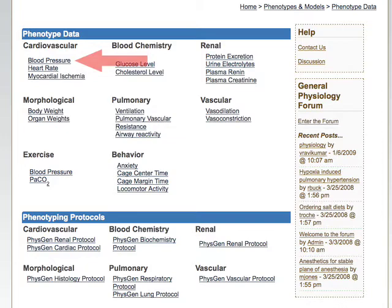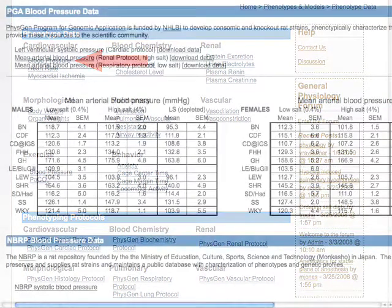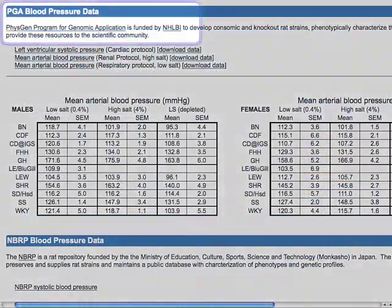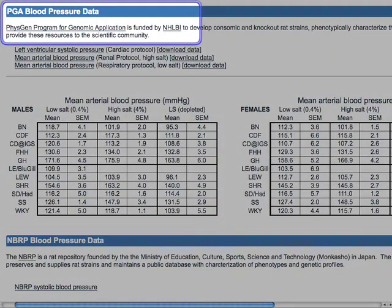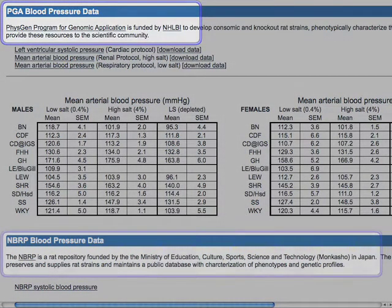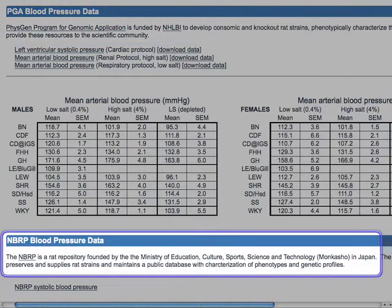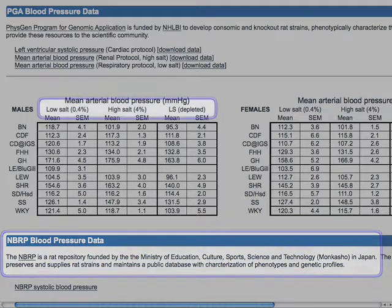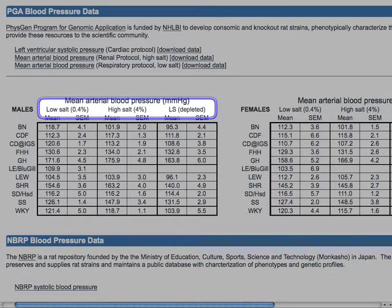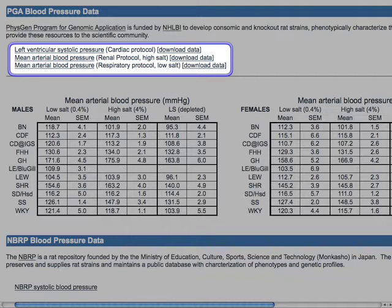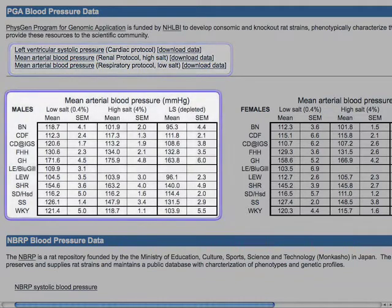For instance, if you click the link for blood pressure, you can see that there are datasets from both the PhysGen Program for Genomic Applications at the Medical College of Wisconsin and from the National Bioresource Project for the Rat in Japan. The PGA data includes values for blood pressure taken under a variety of conditions and using different research protocols. Data for commonly used strains are presented to provide the normal range of measurements in a variety of strains.